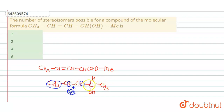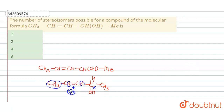The second stereo center: if we talk about the CHOH carbon, it has four different groups — one is H, another is OH, one is CH3, and the fourth is this vinyl/chain group. Its carbon has four different groups, which means it is a stereo center — a chiral center.